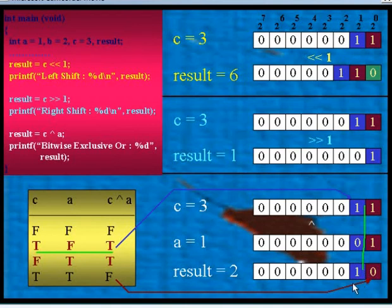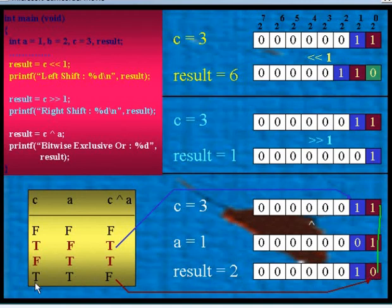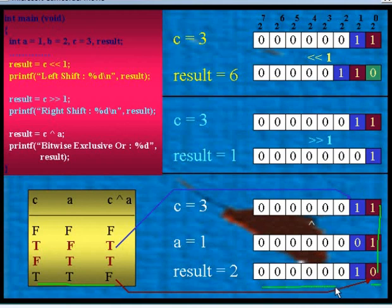Now apply this operator to the first bit: C has 1 and A has 1, which is case true XOR true, giving false — that is 0. Hence the resultant is 00000010, which is the binary equivalent of the decimal number 2. After this bitwise exclusive OR operation, the content of result will be 2.